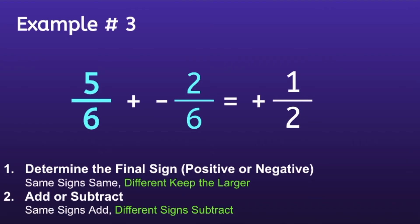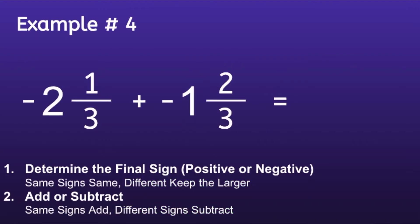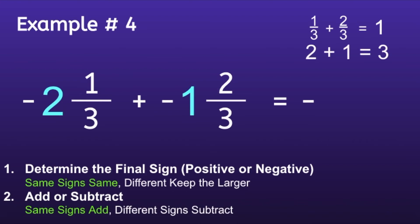Notice I do not have to keep the plus sign in the answer, so I can just write it as 1 half. Example number four: negative 2 and 1 third plus negative 1 and 2 thirds. Step one: Determine the final sign. Since both of these numbers are negative, I will use 'same sign same,' and since both of them are negative, my solution will also be negative. Step two: Add or subtract. Since I have the same signs, I will use 'same signs add.' Since I have mixed fractions, I'm going to first add the fractions: 1 third plus 2 thirds equals 3 thirds, or 1. Then I'll add the whole numbers: 2 plus 1 equals 3. And lastly, 3 plus 1 equals 4. So the final answer will be negative 4.